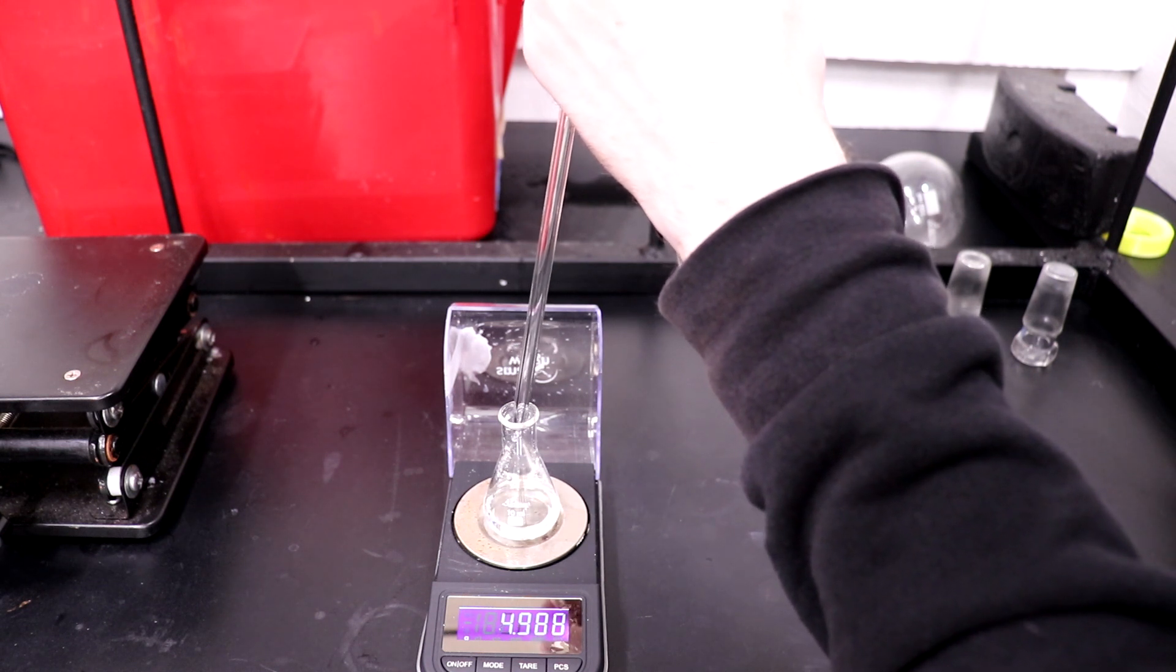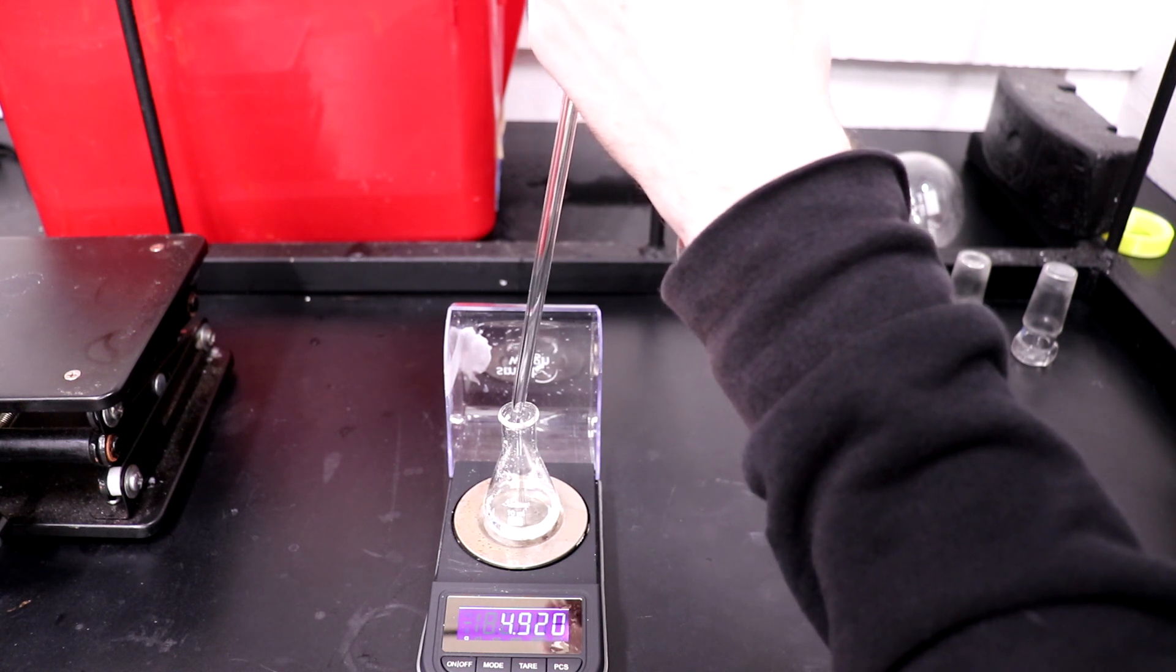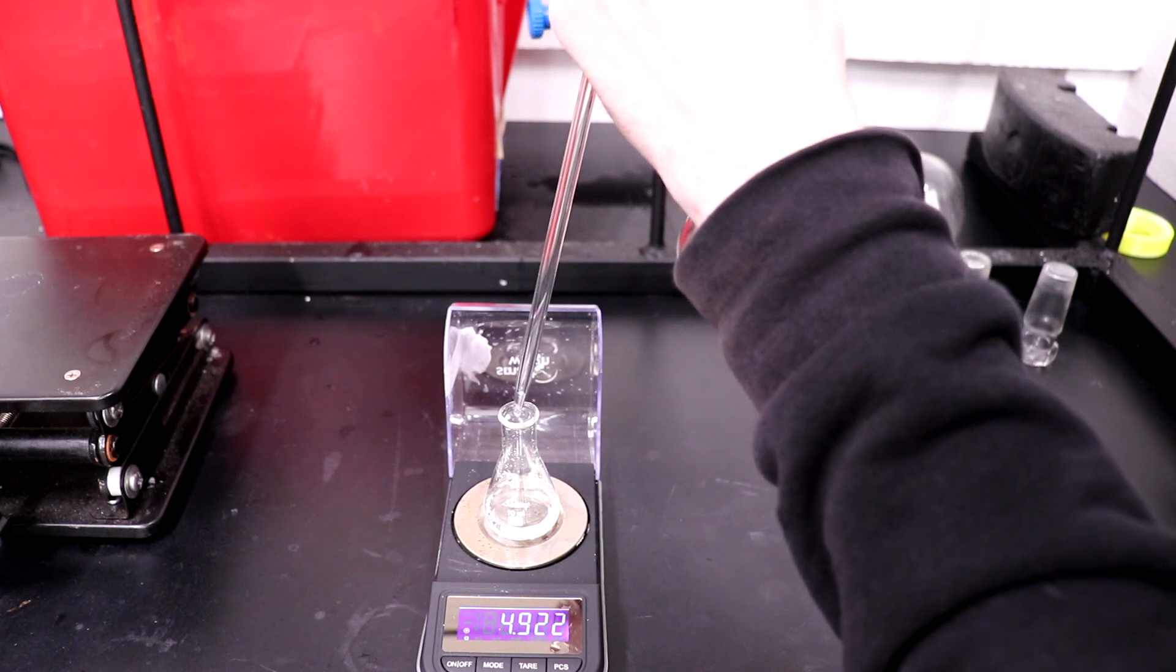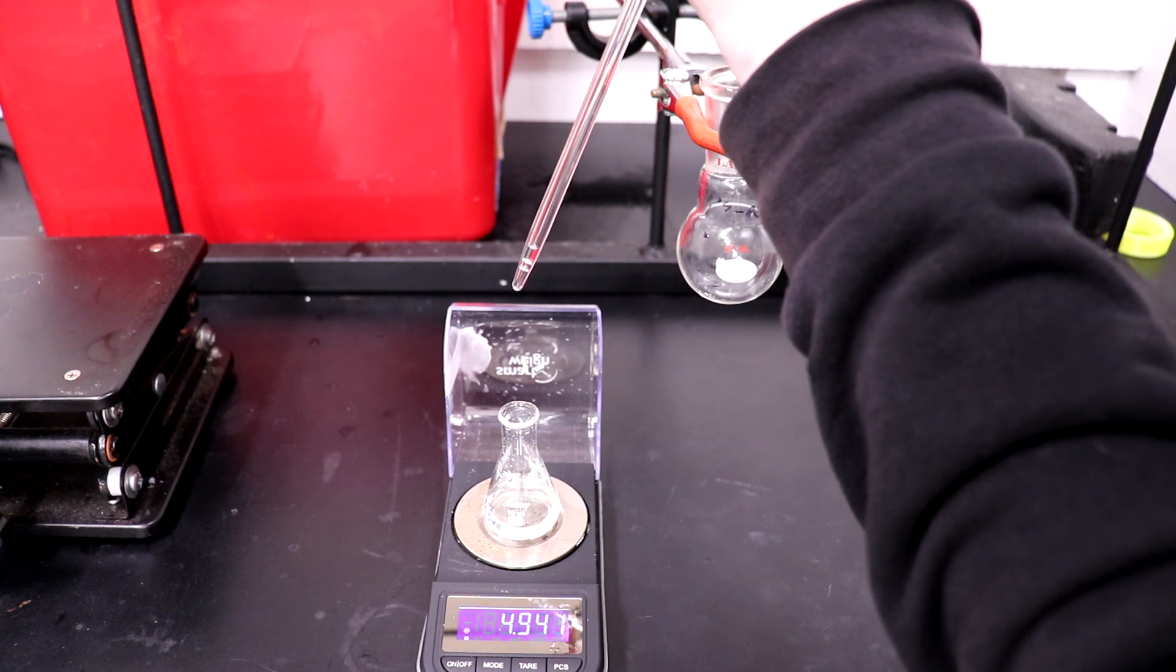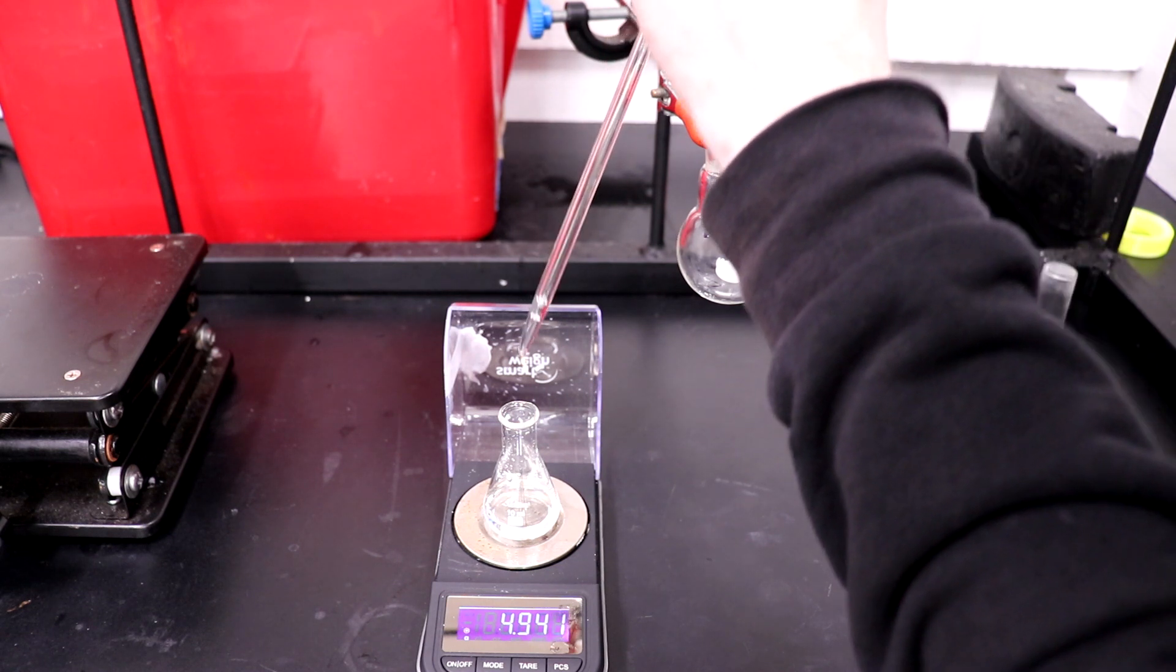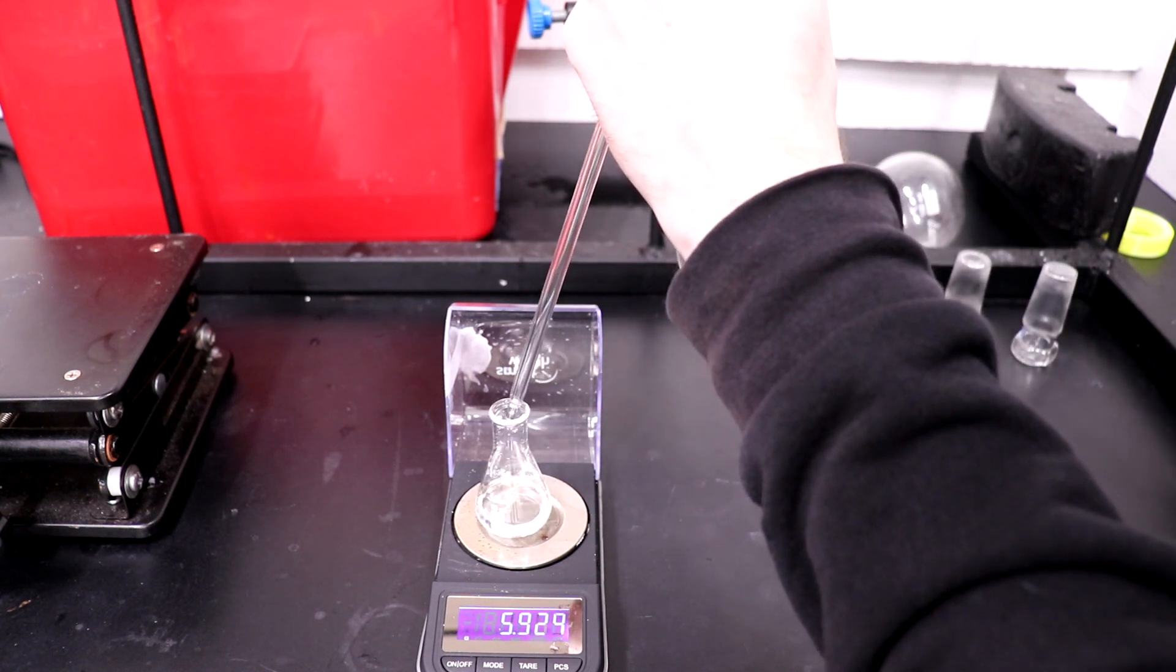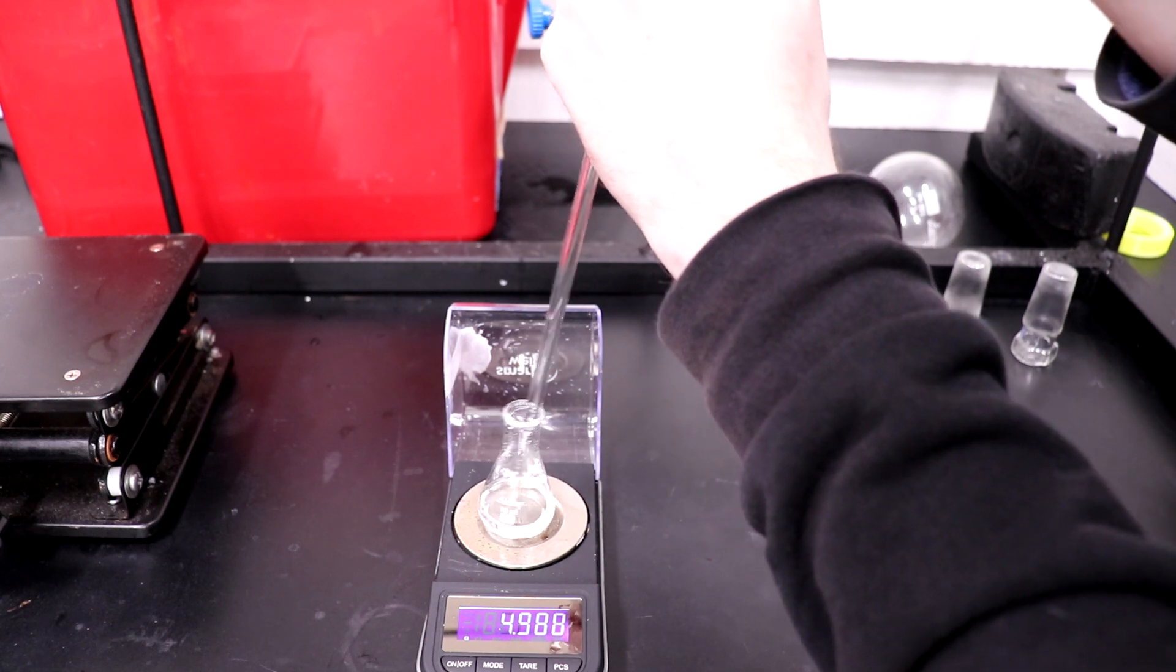I took the density of both of the samples, and they were identical within my measuring error. The average was 1.0029 grams per milliliter, with the theoretical value being 1.004 grams per milliliter, which is again within my measuring error.